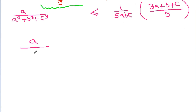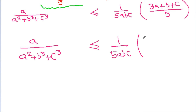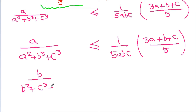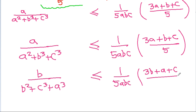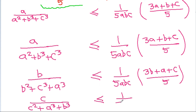So a/(a² + b³ + c³) ≤ (1/(5abc))·(3a + b + c)/5. In the same way we can get b/(b² + c³ + a³) ≤ (1/(5abc))·(3b + a + c)/5, and c/(c² + a³ + b³) ≤ (1/(5abc))·(3c + a + b)/5.